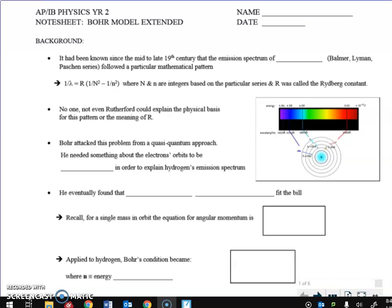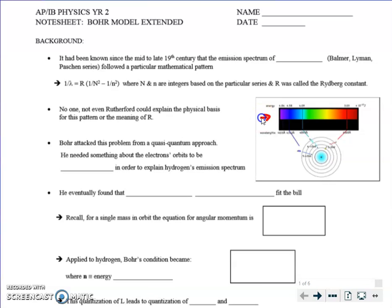I'm going to try to get through the first page in the 15 minutes I have, and then I'll do the second page in a follow-up tutorial. So we need some background to understand why Bohr did what he did. It all centers around the spectrum for a hydrogen atom. A hydrogen atom is simply one proton surrounded by one electron. There is a continuous spectrum from blue to red, but hydrogen shows specific lines for specific colors.